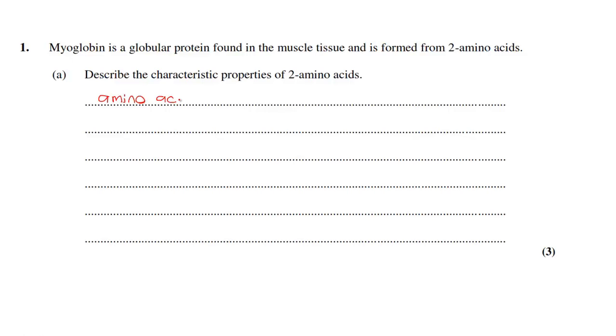The first question is describe the characteristic properties of amino acids. The four that you should remember are: amino acids link to form proteins, they are amphoteric, they act as buffers, they have an isoelectric point, and they exist as dipolar ions or zwitterions.